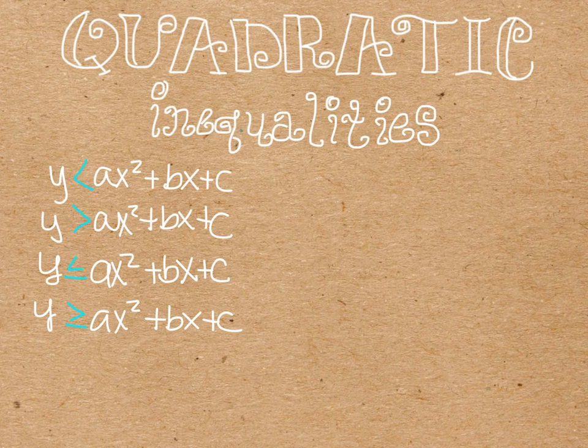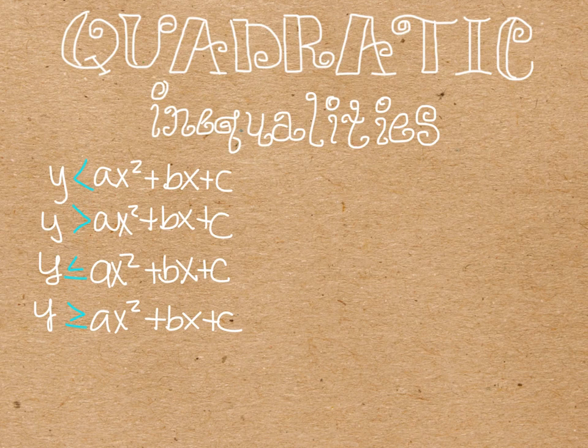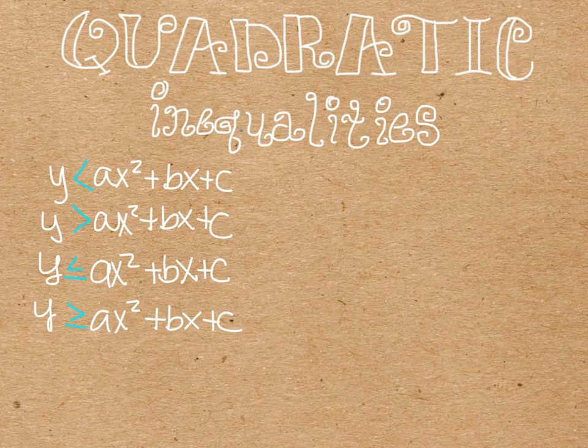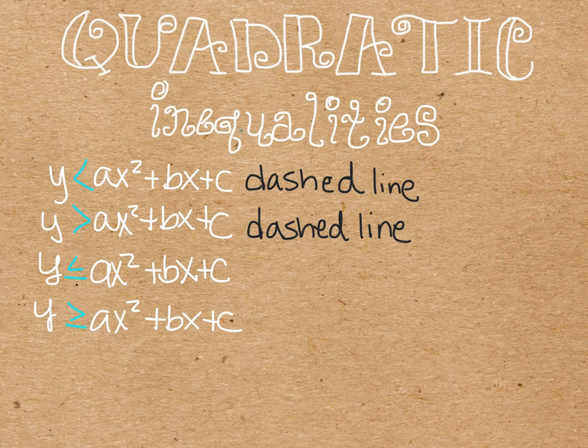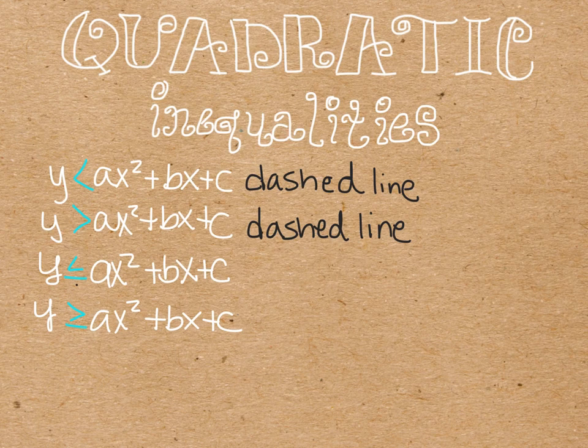So when you graph these, you're going to graph them exactly like you would if that was an equal sign, only if it is a less than or a greater than without a line under it, then we're going to graph it with a dotted line. If it has the equals on the bottom of it, then we will go ahead and graph it with a solid line.